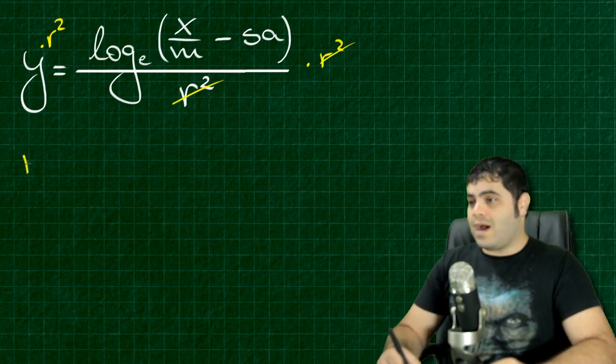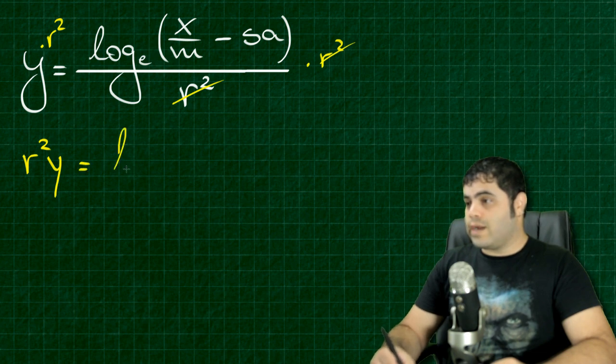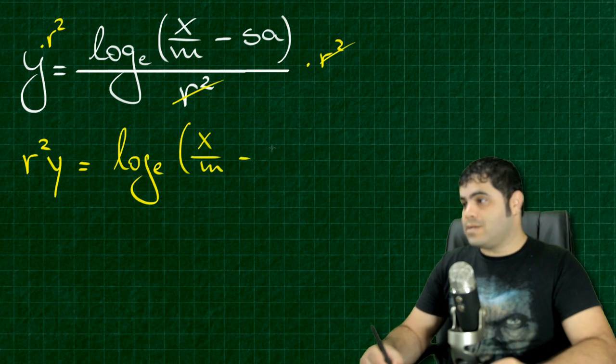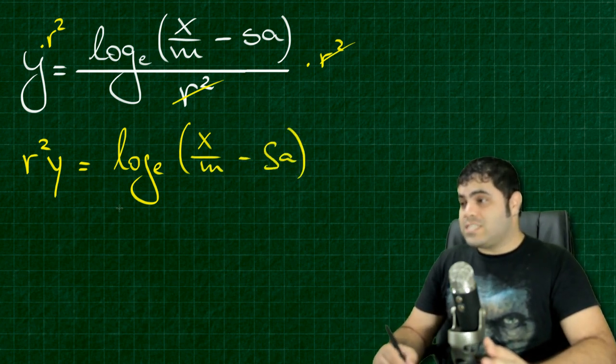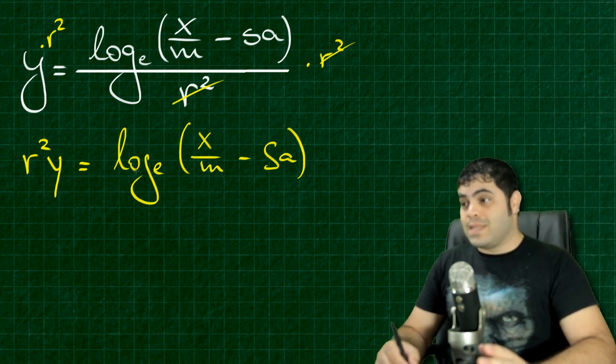And here I have R squared times Y is equal to logarithm in the base E of X over M minus SA. So now what I want to do is I have this logarithm in the base E is equal to R squared times Y.